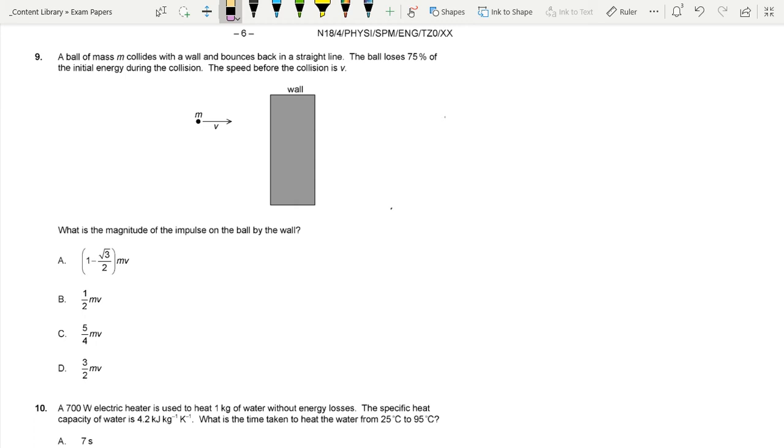Question nine is tricky for a couple of reasons. The question says a ball of mass m collides with a wall and bounces back in a straight line. The ball loses 75% of the initial energy during the collision, and the speed before the collision is v. It looks quite simple on the face of it, but there are a couple of possible traps to look out for.